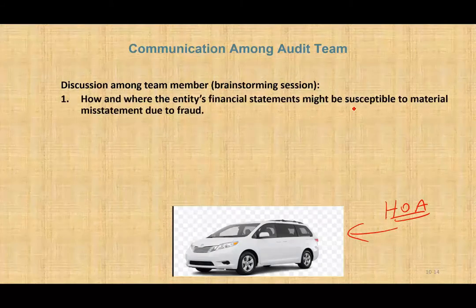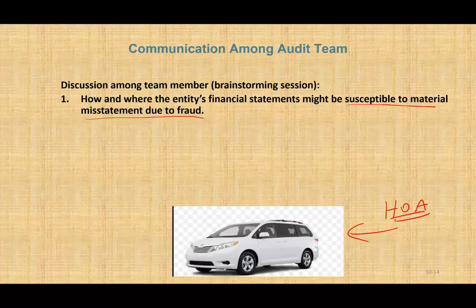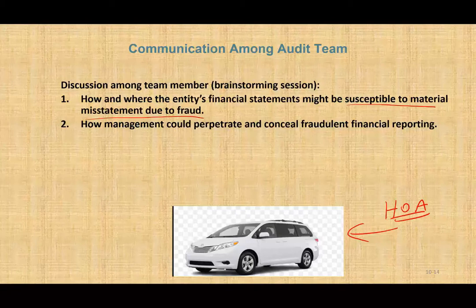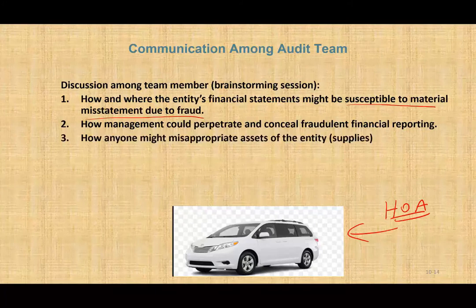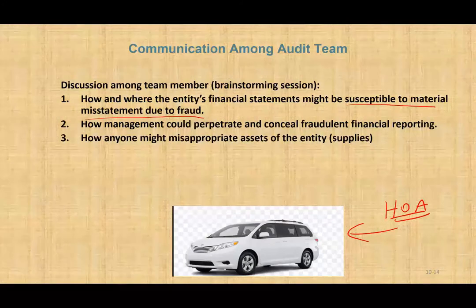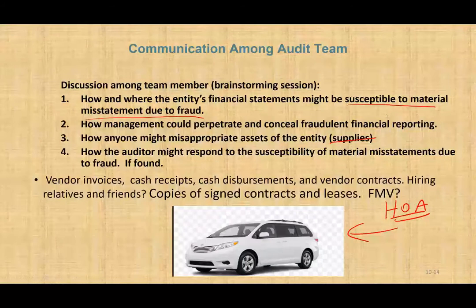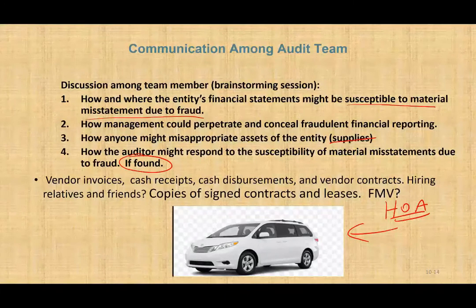How and where might the entity's financial statements be susceptible to material misstatement due to fraud? Are they overstating their assets? Are they understating their income? How could management perpetrate and conceal fraudulent financial reporting? Put yourself in management's shoes — if you're trying to commit fraud, what would you do based on your knowledge of the homeowner's association? How might anyone misappropriate assets? For example, for the homeowner's association, they might buy supplies to paint — would anybody be stealing those supplies? How should the auditor respond to susceptibility of material misstatement due to fraud? Think proactively about what to do if fraud is found.